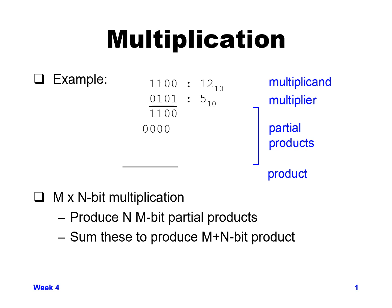The second partial product takes the next bit to the left of the multiplier — the second bit from the right. In this case it's a zero, so we multiply that by the entire multiplicand, getting all zeros, and shift it to the left by one since we're one bit over on the multiplier.